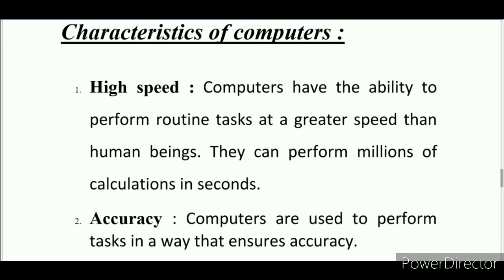Number one: High Speed. Computers have the ability to perform routine tasks at a greater speed than human beings. They can perform millions of calculations in seconds. As you know, computers work very fast — their speed is much higher than human beings. They can calculate many instructions in even less than a second.